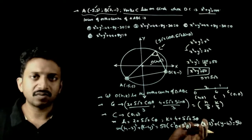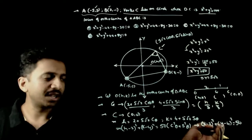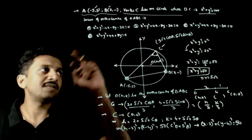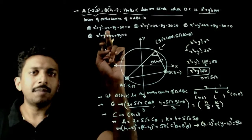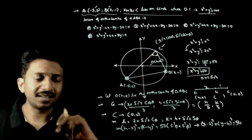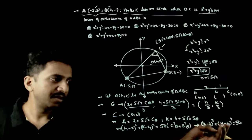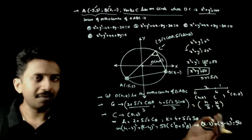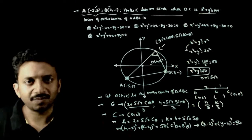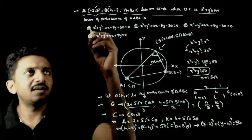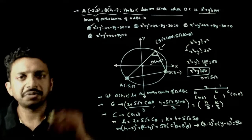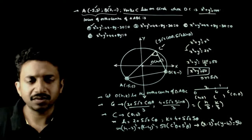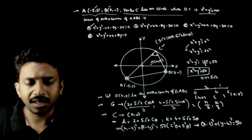Expanding: x square plus y square minus 4x minus 8y plus 16 plus 4 minus 50 equals 0, giving x square plus y square minus 4x minus 8y minus 30 is equal to 0. So option A is the right answer to this question. Thank you.